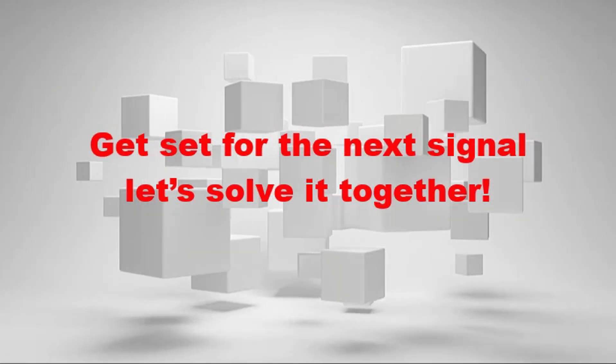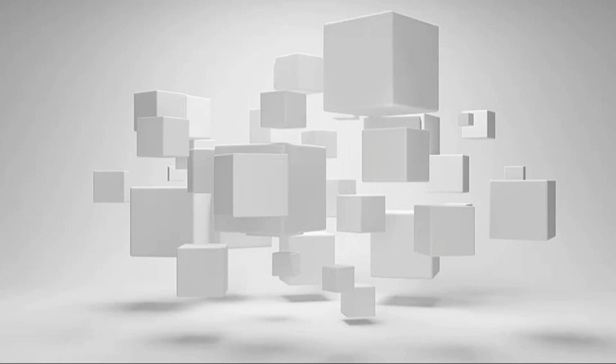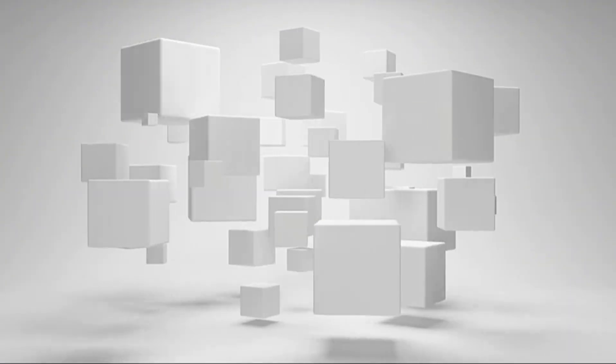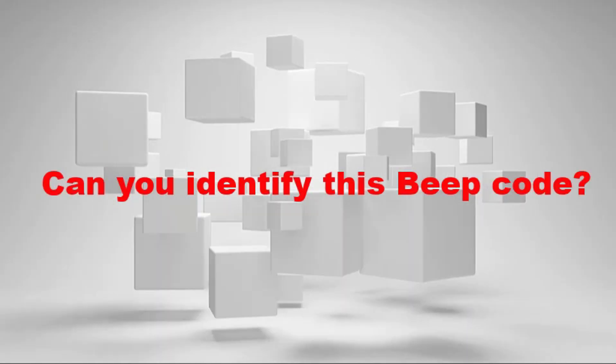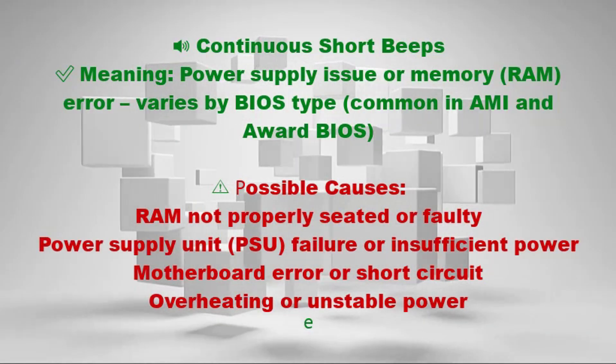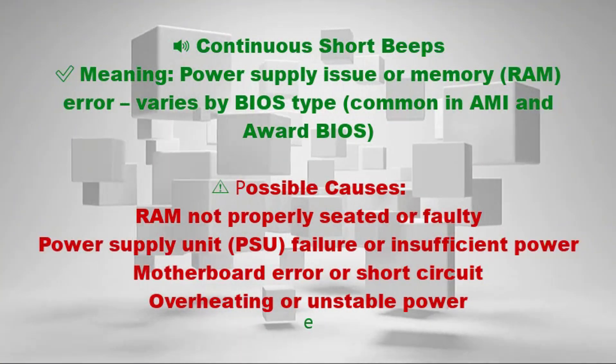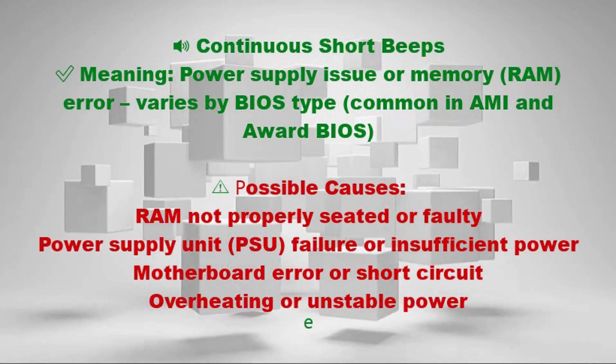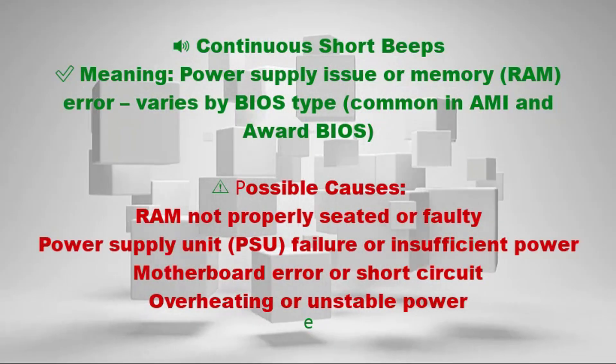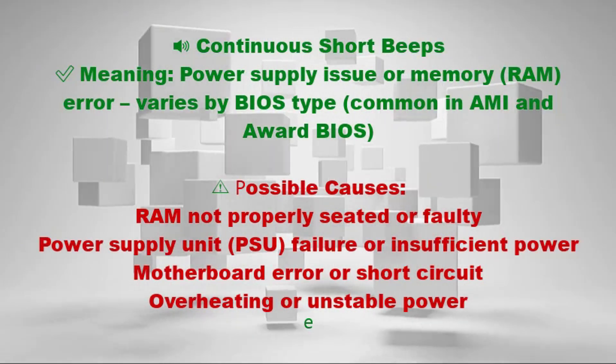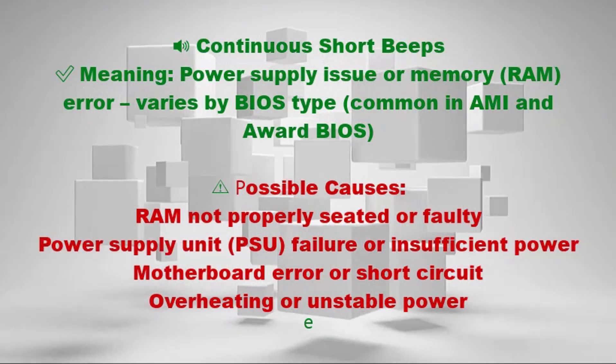Get set for the next signal. Let's solve it together. What does this sound mean? Continuous short beeps — meaning power supply issue or RAM error. This varies by BIOS type and is most common in AMI and Award BIOS. Possible causes: RAM not properly seated or faulty, power supply unit failure or insufficient power, motherboard error or short circuit, or overheating/unstable power.